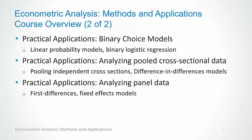We then look at several practical applications or extensions of the multiple regression model. The first will be binary choice models where the dependent variable is dichotomous. The second practical application will be how we can analyze pooled cross-sectional data. And the third practical application will be how we can analyze panel data when there are unobserved or omitted variables that do not vary over time.